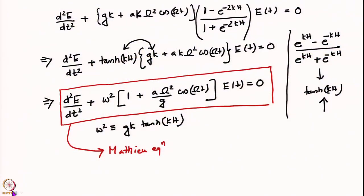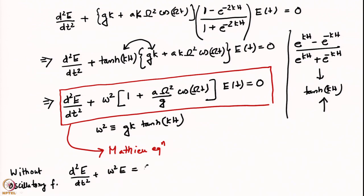In the absence of oscillatory forcing, this equation reduces to d²E/dt² + omega²·E = 0, which tells us E is a sine or cosine function of time with frequency given by the dispersion relation. This exactly recovers the result of a normal-mode analysis on the unforced problem, confirming consistency with earlier results.